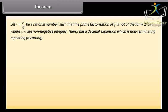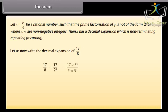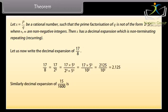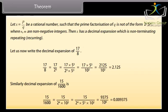Theorem: Let x = P/Q be a rational number such that the prime factorization of Q is not of the form 2ⁿ × 5ᵐ, where n and m are non-negative integers. Then x has a decimal expansion which is non-terminating repeating (recurring). For example, the decimal expansion of 17/8, and similarly the decimal expansion of 15/1600 is 0.009375.